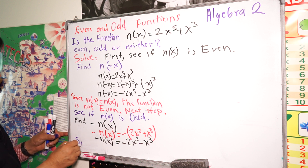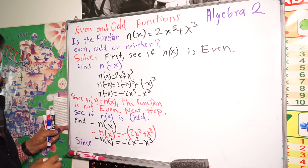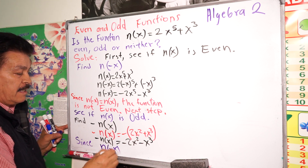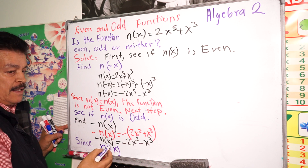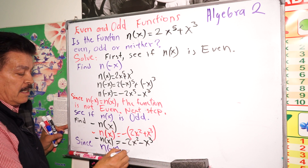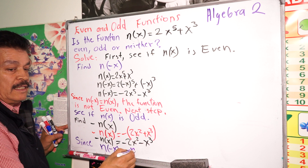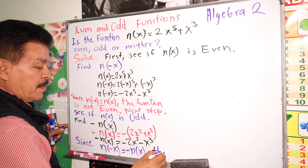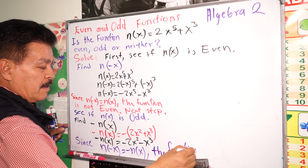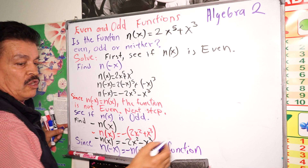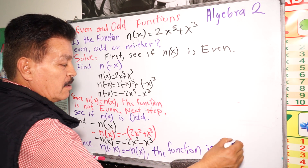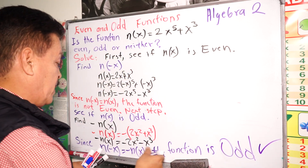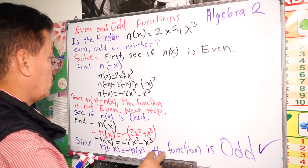Since n of negative x equals negative n(x), the function is odd. This was our conclusion — the solution to this problem.